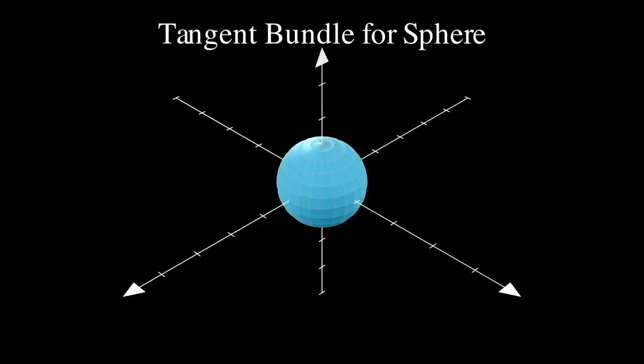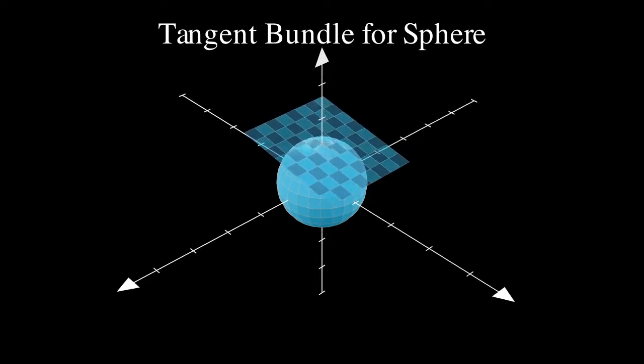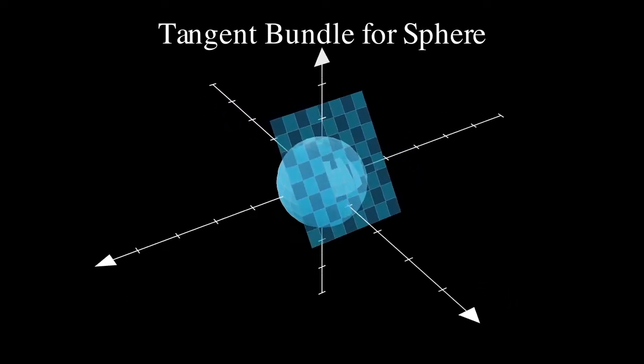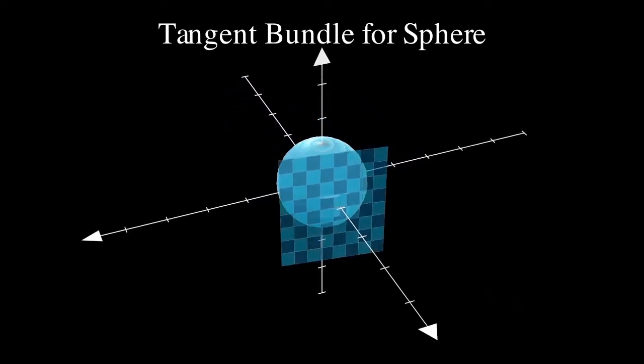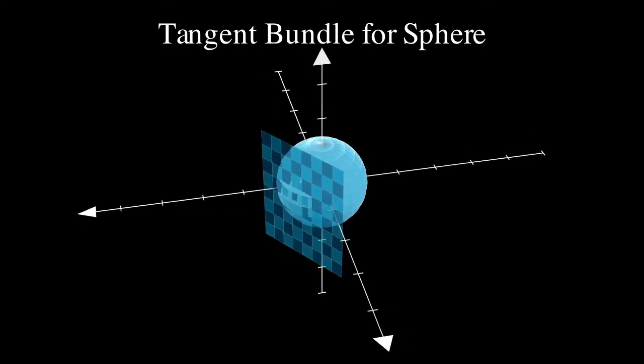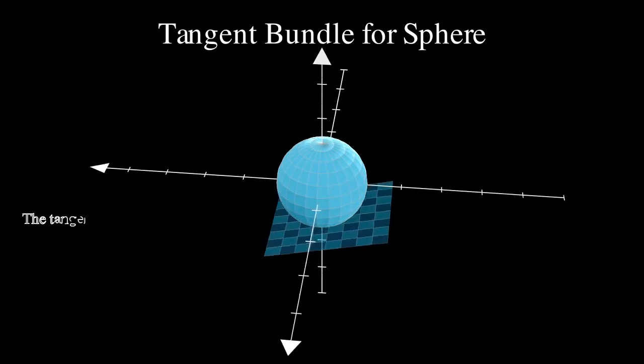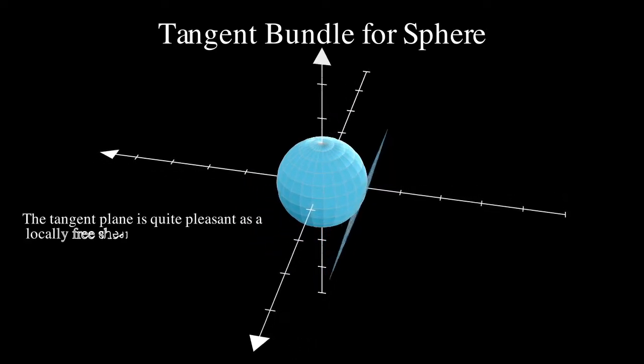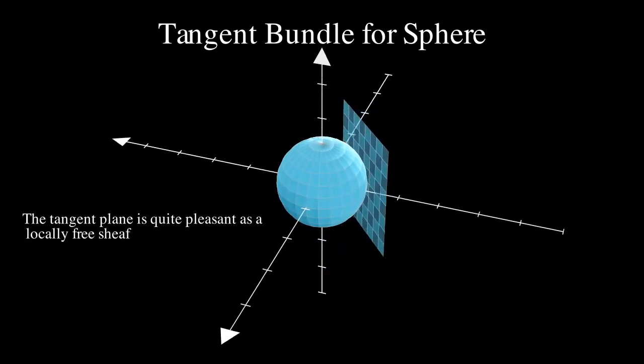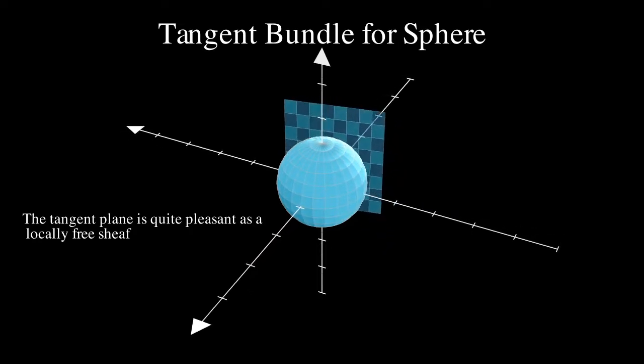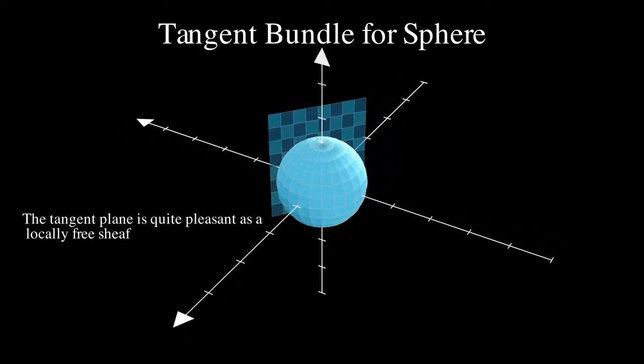Sheaves are pretty tricky to talk about, but a good motivational example is what's known as the tangent bundle. You should think of it as the geometric object you obtain when you glue or bundle together all of these tangent planes shown on the screen into one higher dimensional object. And as far as sheaves go, it plays pretty nicely since you can basically guess what it's going to look like over any point.